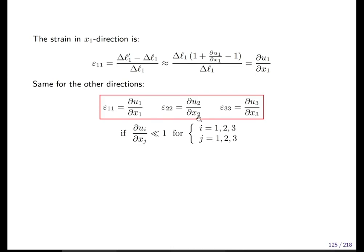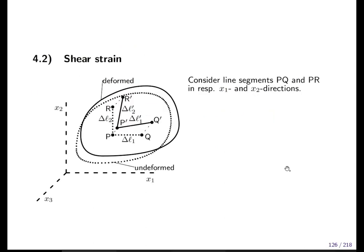Okay, for the other directions, as usual, if we do the same in the two direction or in the three direction, then we get the same derivatives, just other indices. And those things will become the normal or the diagonal elements of the so-called strain tensor. More details on this later. End of 4.1; next section will be on shear strain.